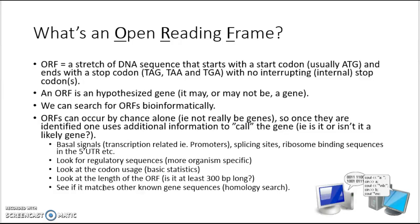We look for ORFs bioinformatically — it gives us a search image. They can occur by chance alone, so once we identify them, we have to use additional information to call the gene: is it or isn't it a likely or real gene? The information we use once we've found an ORF includes looking for what are called basal signals, for example promoter sequences, which are always associated with genes.